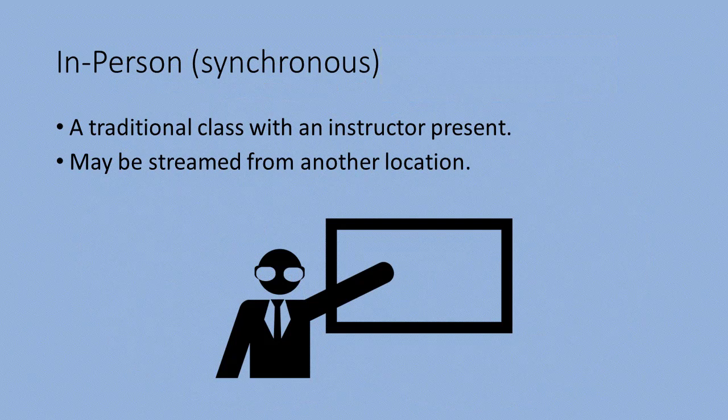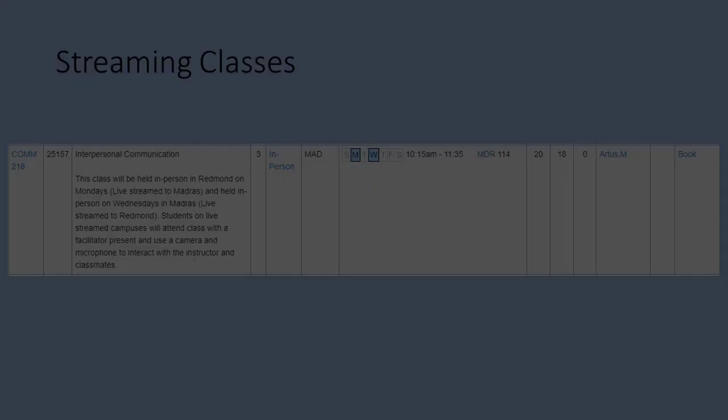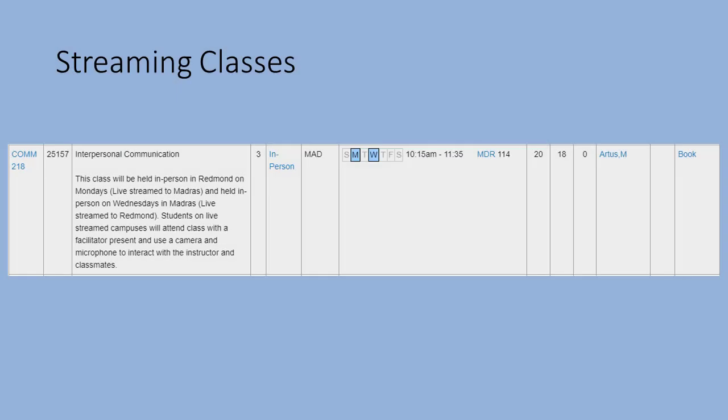Starting with our synchronous courses, the first option is in-person courses. For these classes, you will go to a specific location on one of the COCC campuses at a specific time. This is the traditional delivery method, where you will be in a classroom with an instructor present. Some in-person classes are streamed, meaning that you will go to a campus and have a live video feed of an instructor on another campus.